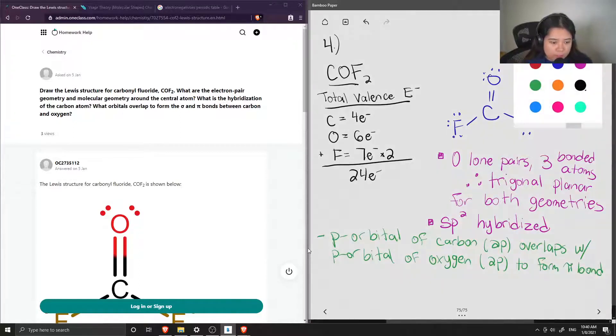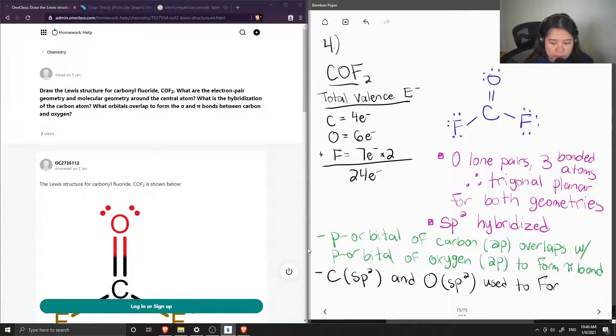And for the sigma bond, the carbon sp2 orbital and the oxygen sp2 orbital are used to form the sigma bond.